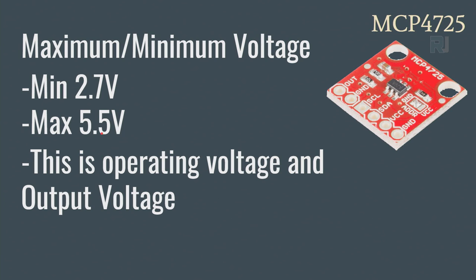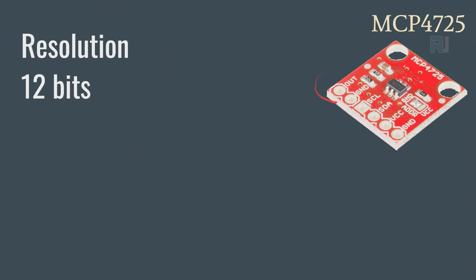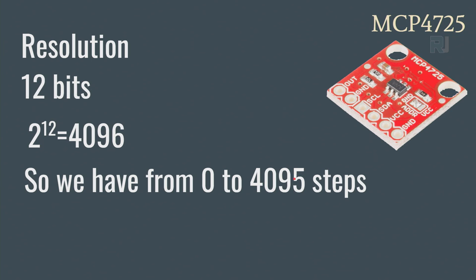The minimum operating voltage is 2.7 volts and maximum is 5.5 volts. Whatever operating voltage you connect, you can get output up to that maximum value. The resolution is 12 bits, meaning 2 to the power of 12, which equals 4096 steps — so we have 0 to 4095 steps from 0 to 5 volts or whatever voltage you have.